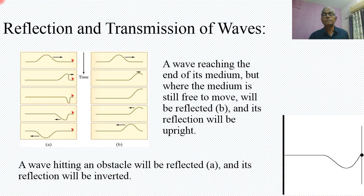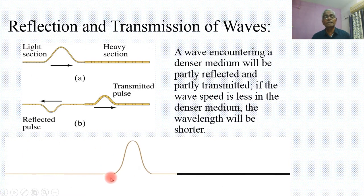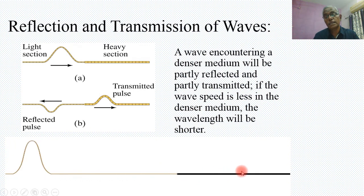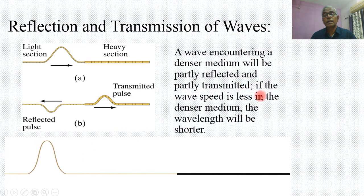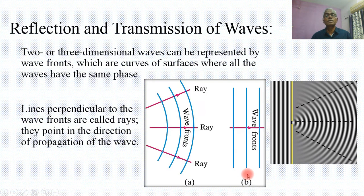This depends on what kinds of media are there, whether the wave is moving from a rarer to a denser medium. When a wave encounters a denser medium — represented by a thick line — and a lighter or rarer medium represented by a thin line, the wave is partly reflected and partly transmitted. If the wave speed is less in the denser medium, the wavelength will be shorter. The wavelength is larger in the rarer medium and smaller in the denser medium.